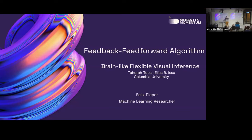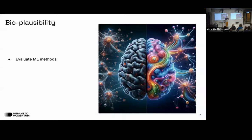Today I wanted to talk about the Feedback Feedforward algorithm — a bit of a weird name, but it'll make sense soon. The paper is from Tosi and Issa, both from Columbia University, and they mainly focused their research on bio-plausibility: looking at how our brain processes information and comparing it to how we train machine learning models.